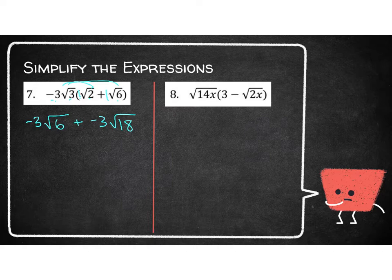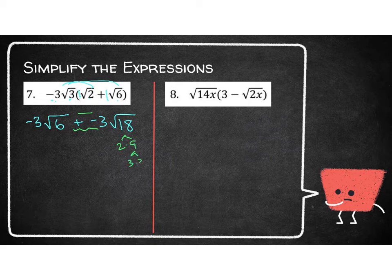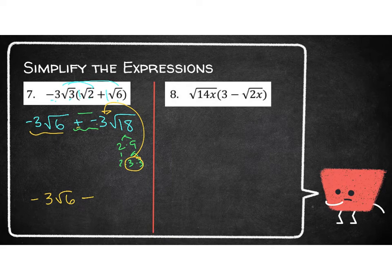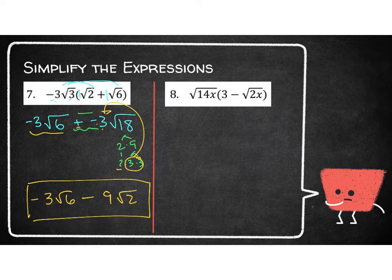These are not like radicals — they cannot be put together. But there are a couple of things we can fix. One, I'm going to change plus negative 3 to just minus in the middle. Two, I need to break down my radicals if I can. 6 is just 2 and 3, so I can't do anything with that. But 18 is 2 and 9, and 9 is 3 and 3. That pair of 3s can come out, giving 3 times 3 which is 9 out front, with a 2 left underneath. So the result is negative 3 root 6 minus 9 root 2. Those are still not like radicals, so that's the end.